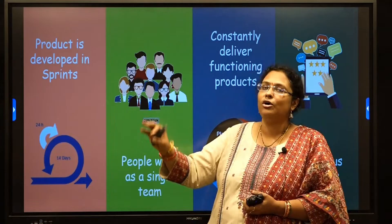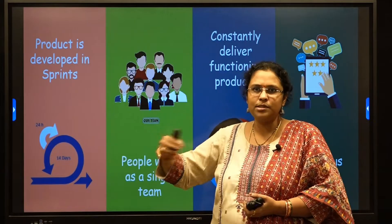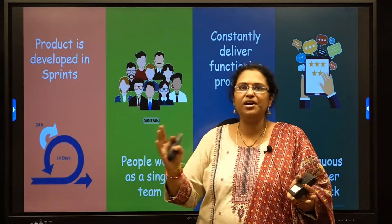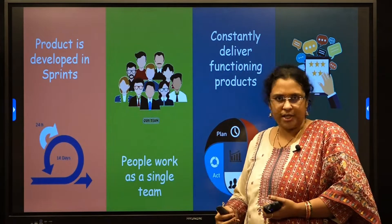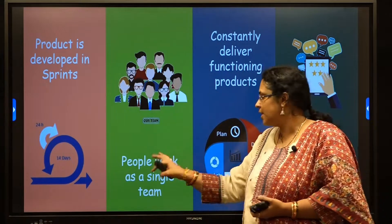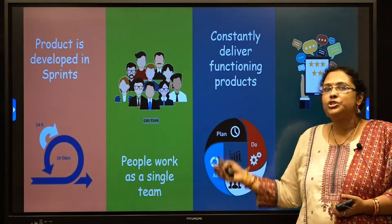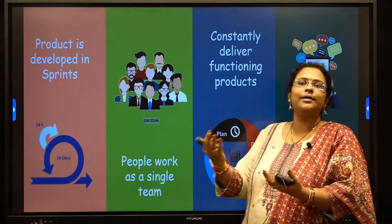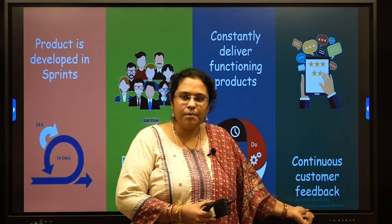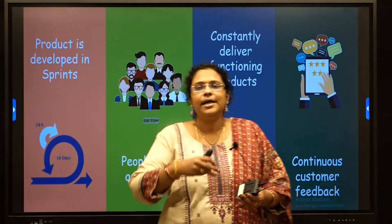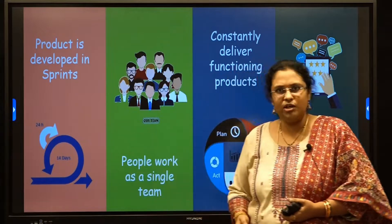While each sprint is being developed over 14 days, the whole team involved in product development works on that single sprint only. In previous methodologies, the product was divided into modules developed separately by different teams and later integrated. In Scrum, the whole team works together on each chunk, so after each sprint — after 14 days — a working product is delivered to the customer, who then gives feedback for the next sprint.